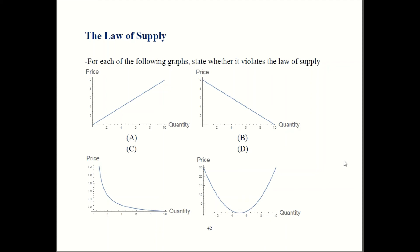All right, let's go over the answer. So in our first graph, when price goes up, quantity also goes up, so that follows the law of supply. So graph A is looking good.